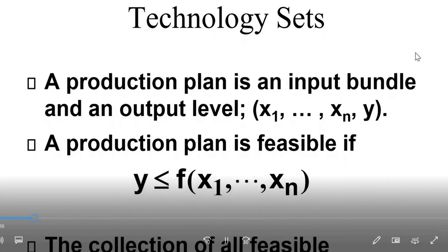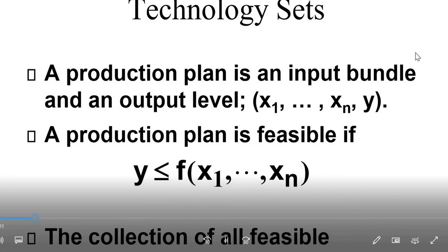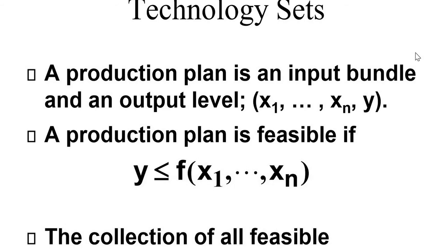The next topic is the technology set. A production plan is an input bundle and an output level. A production plan is feasible if y ≤ f(x1, x2, x3, ..., xn). Inputs used are greater than or equal to the level of output. The collection of all feasible production plans is the technology set.